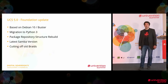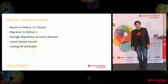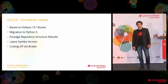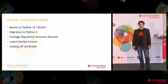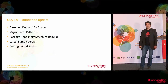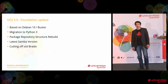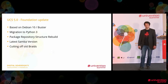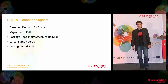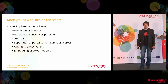UCS 5 is based on Debian 10 Buster. We're using Python 3 now. We have modernized the structure of the packet repository and will publish UCS 5 with the latest Samba version. On top of that, we got rid of some outdated features and outdated aspects in order to have more options for innovation. I'll get back to that later.